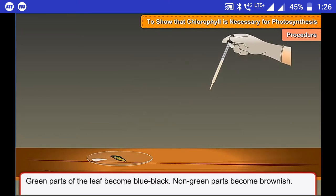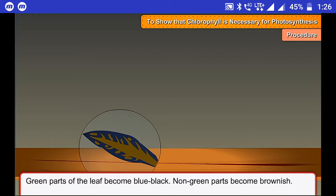Green parts of the leaf become blue-black. Non-green parts become brownish.